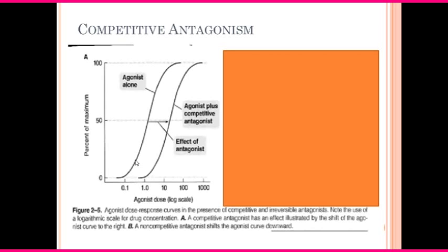Here you see a DRC — that is a dose-response curve — of the agonist alone. If you are new to this channel, go back and watch my lecture on dose-response curves for full knowledge. Then you have a DRC of the same agonist plus a competitive antagonist added to it. What has happened is a rightward parallel shift of the DRC. Why should this occur? The reason is that competitive antagonism is a reversible process.